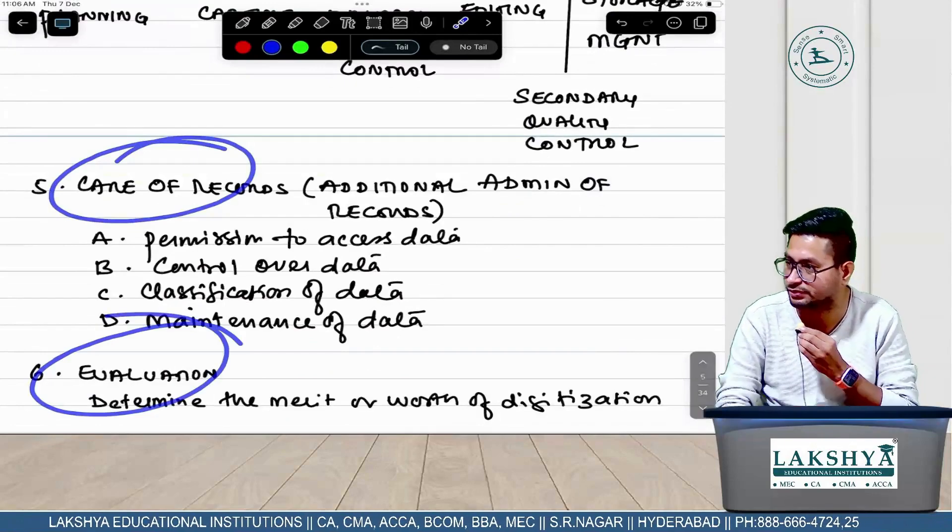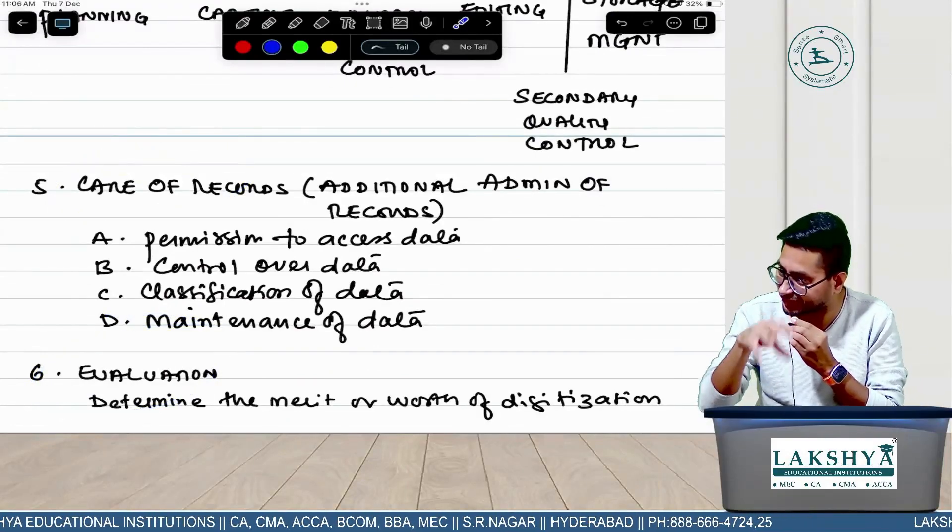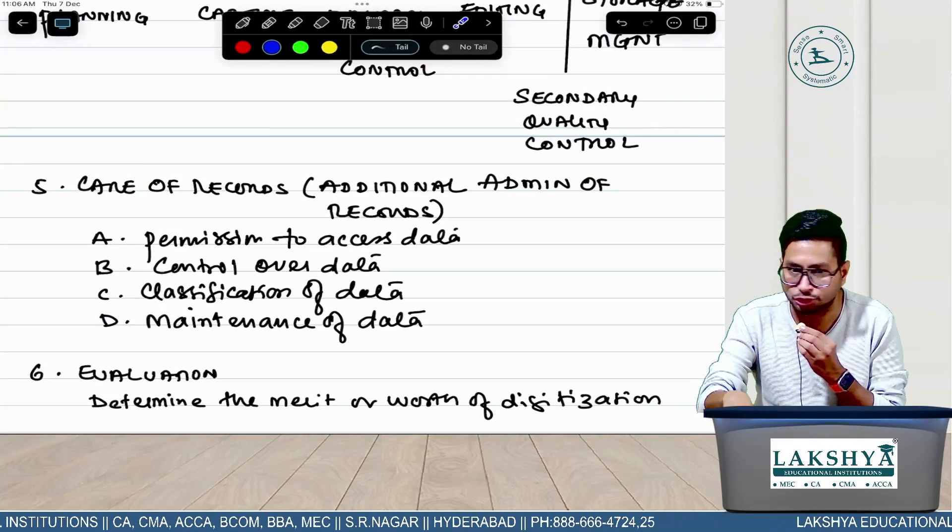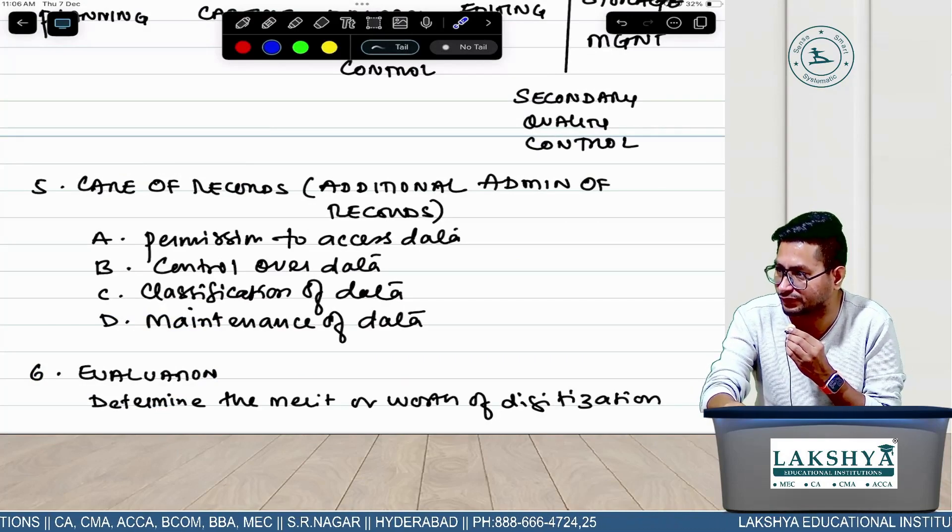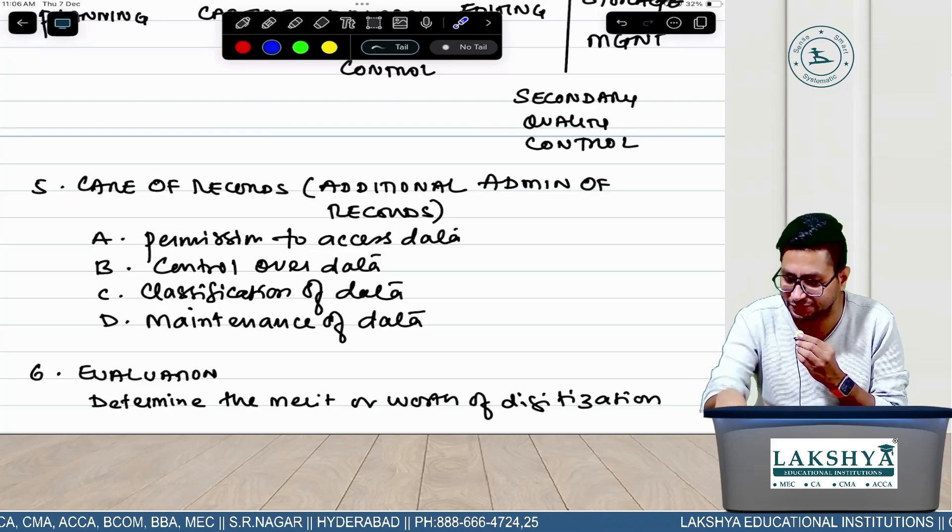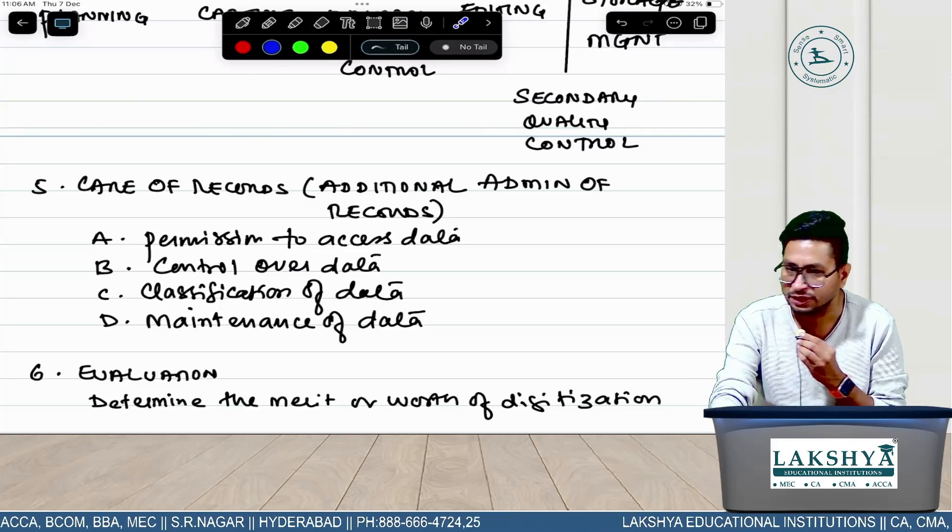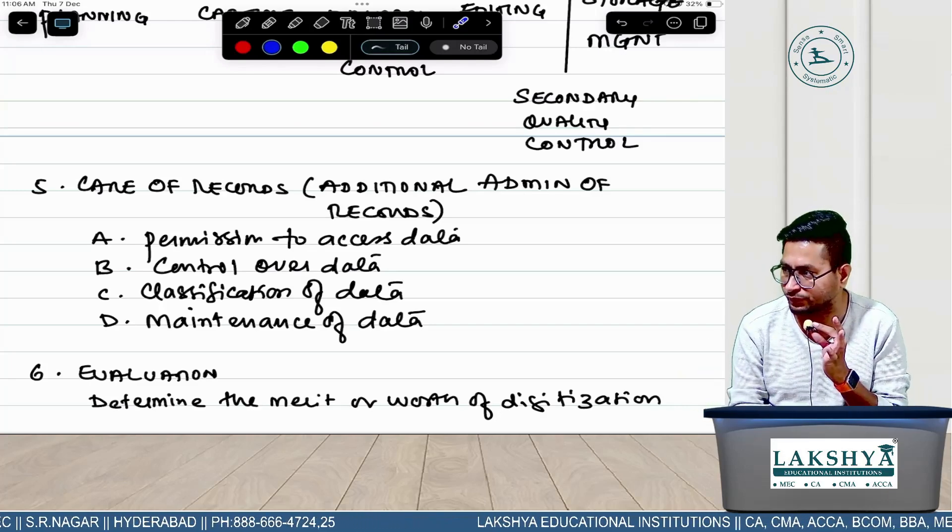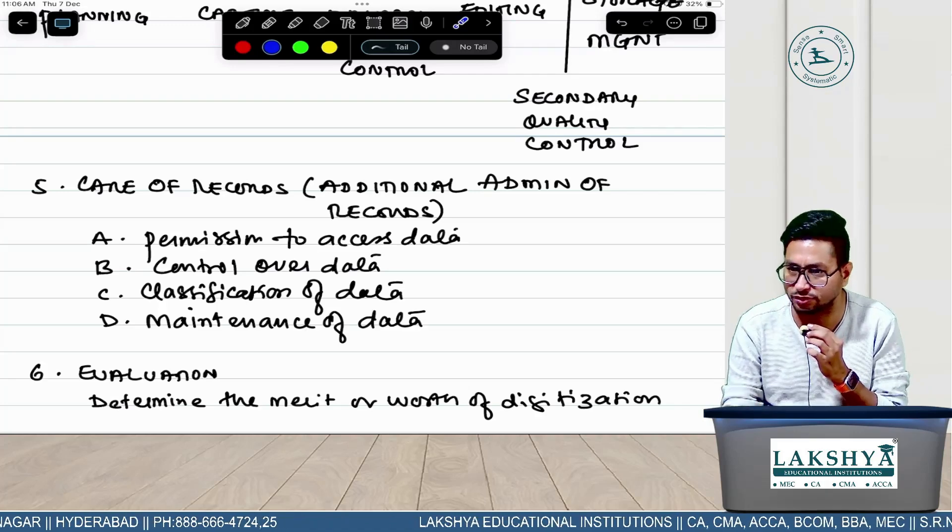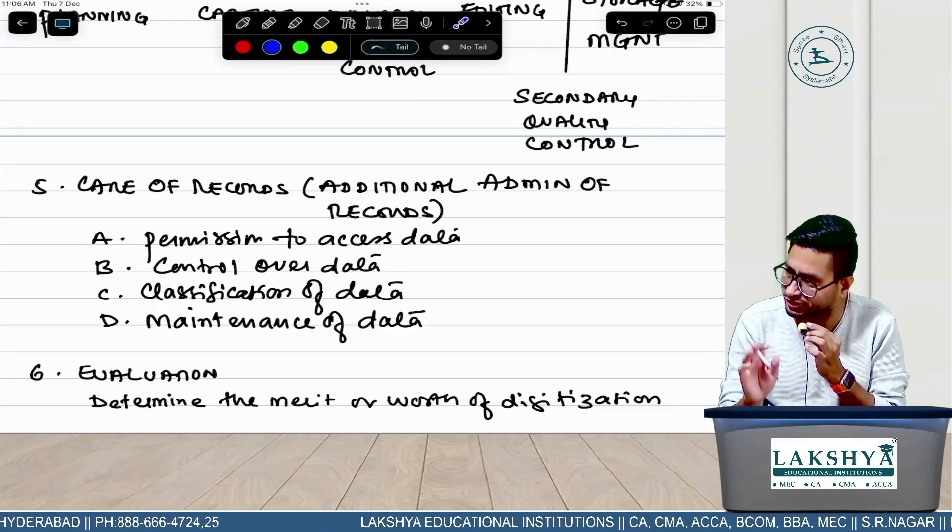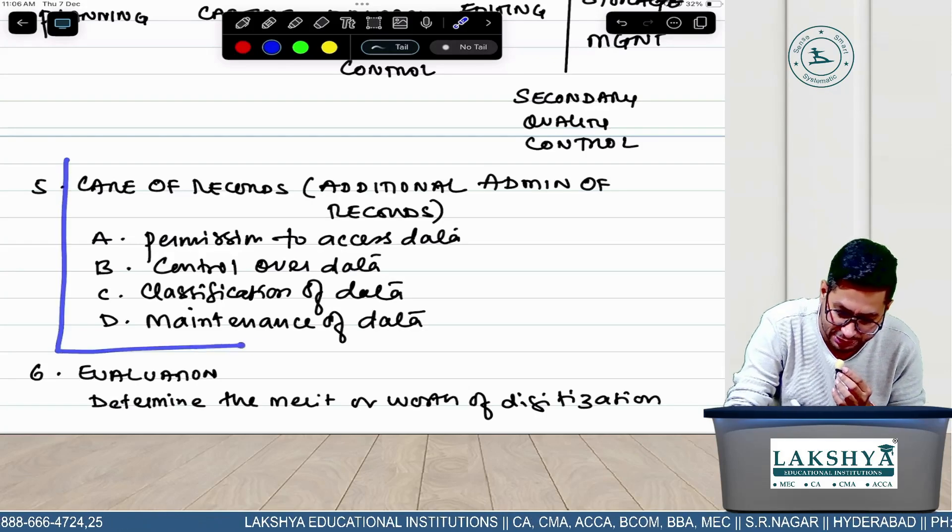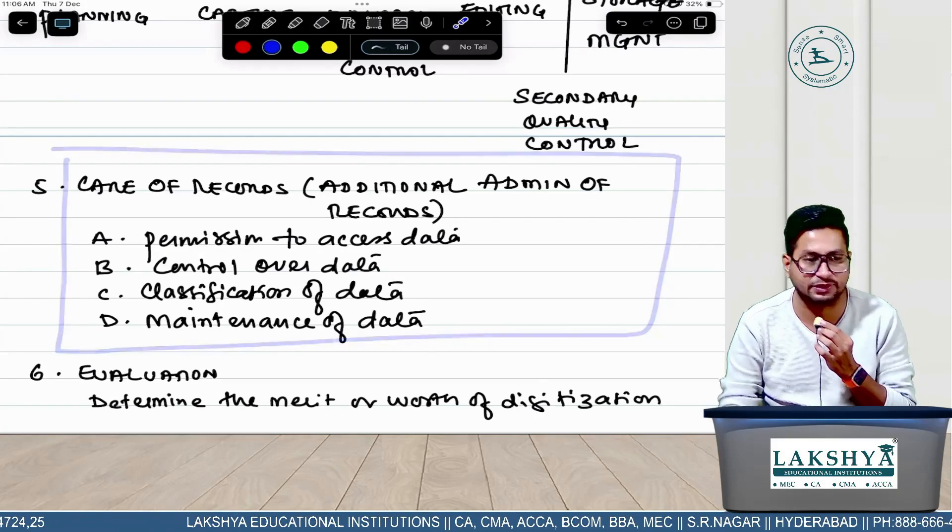Then write only subheadings and come. For one mark, why will you write three pages? Depending on the marks, you decide. If a small question gets six or seven marks, write whatever answer is given in the material - enough, you'll get marks. But if a big question like this gets one mark, write only subheadings and come.